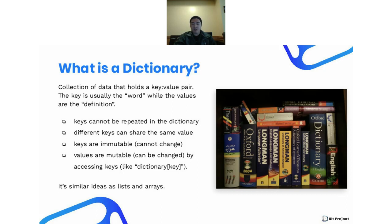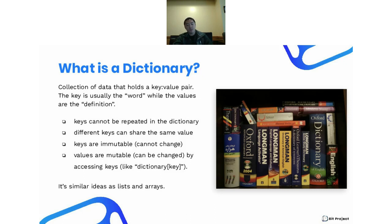However, different keys can share the same value — similar to how two synonyms in a dictionary can have the same meaning. Please bear in mind two things: first, keys are actually immutable; once you initialize a key, you cannot change it. Second, values are mutable — you can actually change the value that a key is associated with. Dictionaries are data structures that store data. If you wanted to store a key-value pair, it would be useful to use a dictionary, and we're going to be using the dictionary data structure very extensively in this Twitter bot webinar.